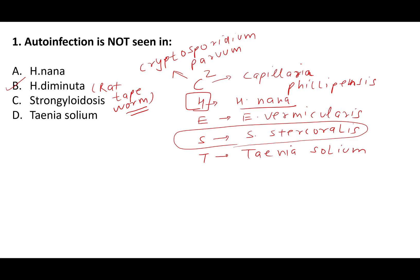Regarding T. solium, remember it is the armed tapeworm and the larval form is Cysticercus cellulosae. Regarding Cryptosporidium parvum — a favorite of examiners — size is 4–6 microns. Drug of choice in HIV-positive patients is nitazoxanide. Brothers of Cryptosporidium are Cyclospora and Isospora — also coccidian parasites. Cyclospora is 8–10 microns, Isospora is 23–36 microns. They cause diarrhea in HIV-positive patients.